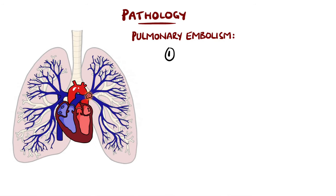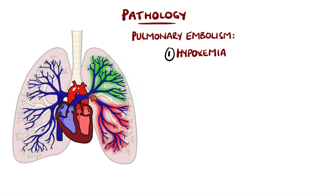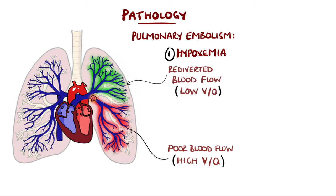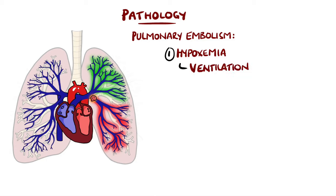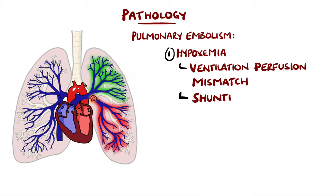The first is hypoxemia, meaning low levels of oxygen in the blood. This happens because the blood clot is preventing the blood from flowing to the areas of gas exchange, and in response, the body tries to send more blood to other parts of the lung. This is called a ventilation-perfusion mismatch. Shunting also contributes to hypoxemia and the ventilation-perfusion mismatch.